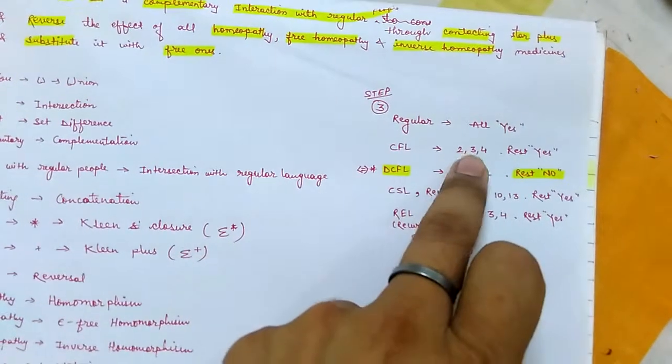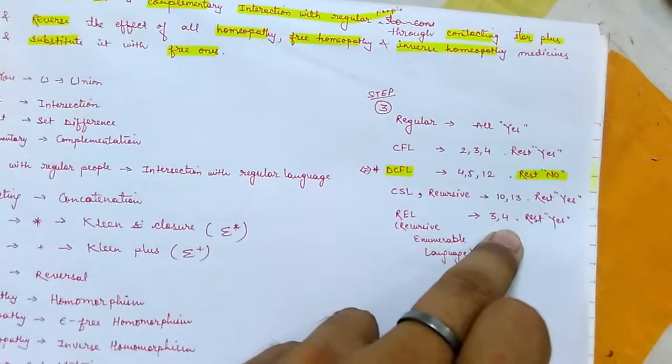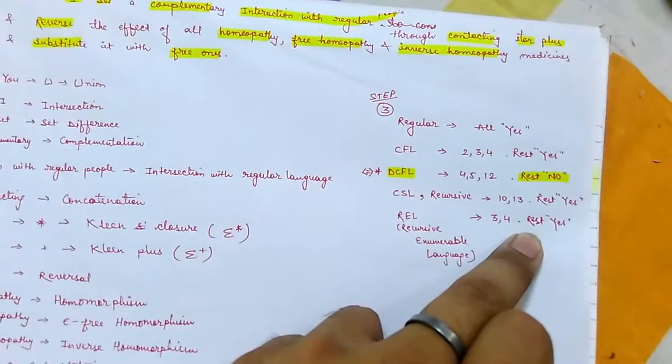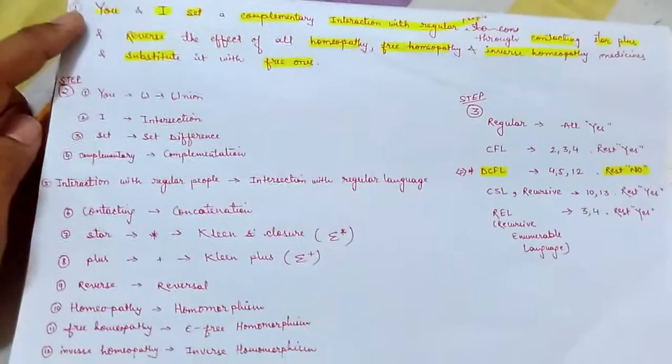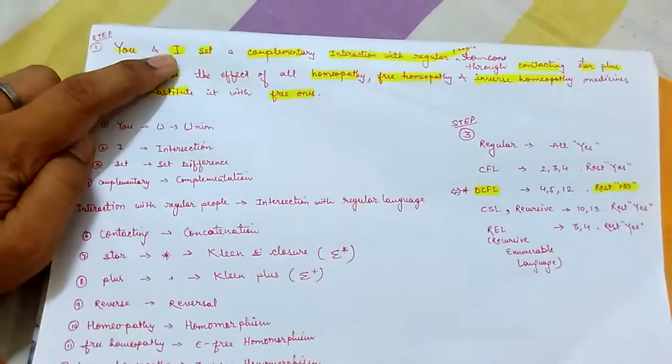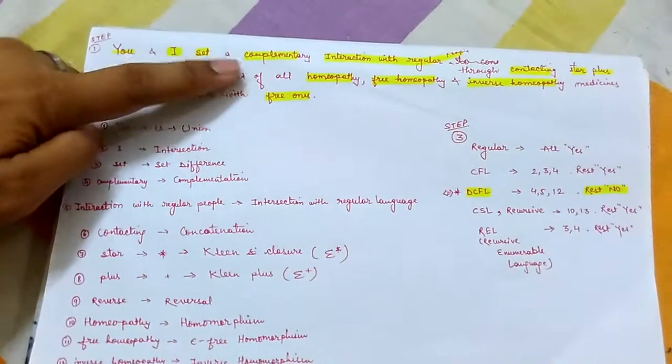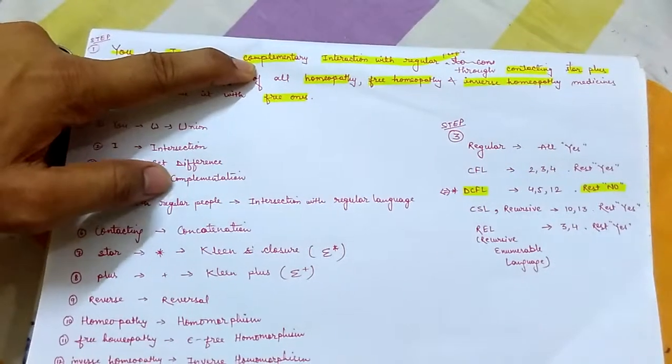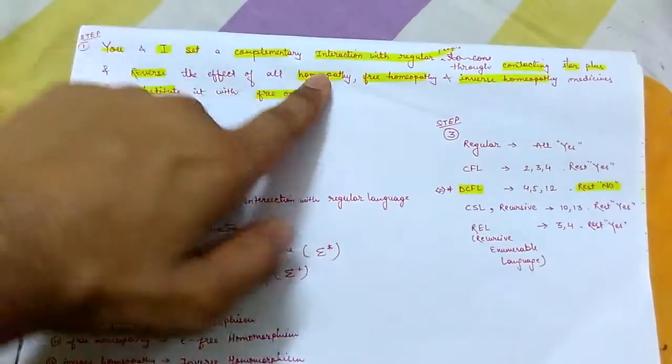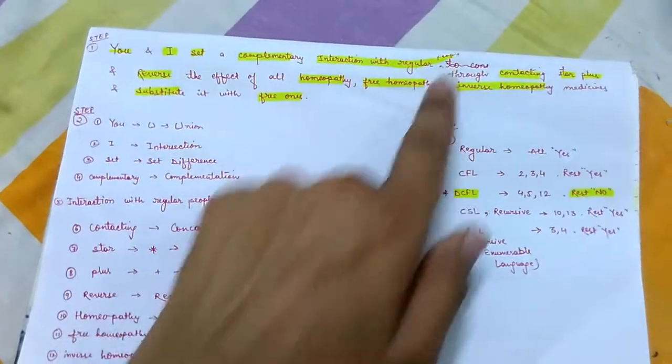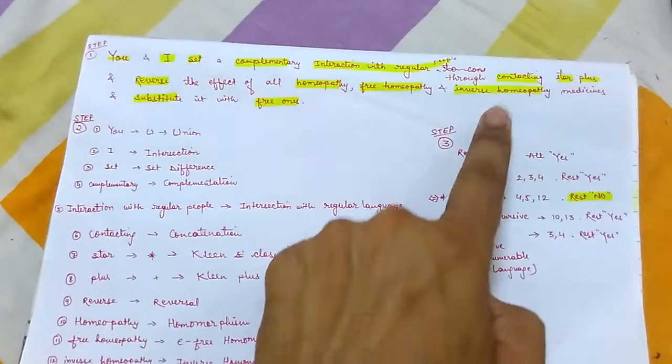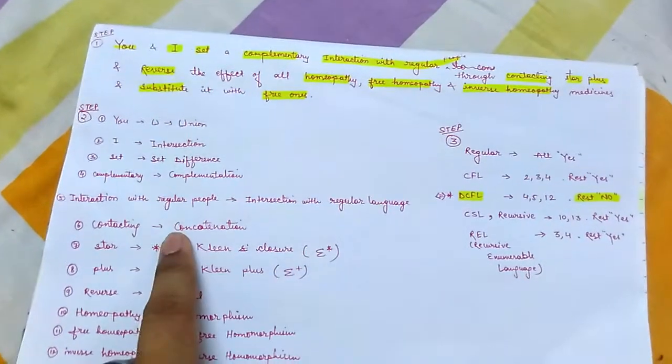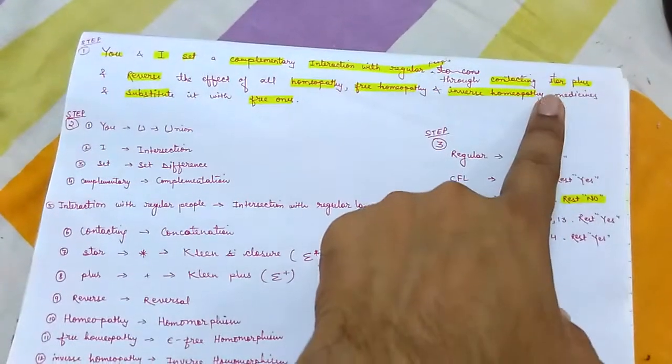Friends, now you may be wondering how to remember these things. See, it's very simple. U for union, I for intersection, set for set difference, complementary for complementation. Interact, interaction with regular people, that means intersection with regular language. Then contacting, that means concatenation.